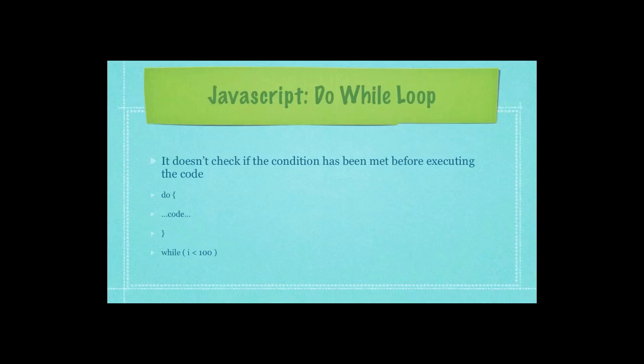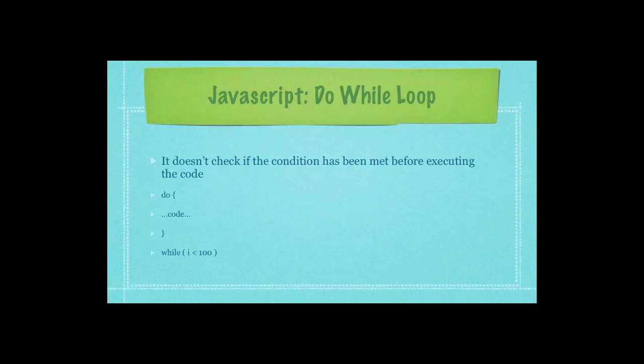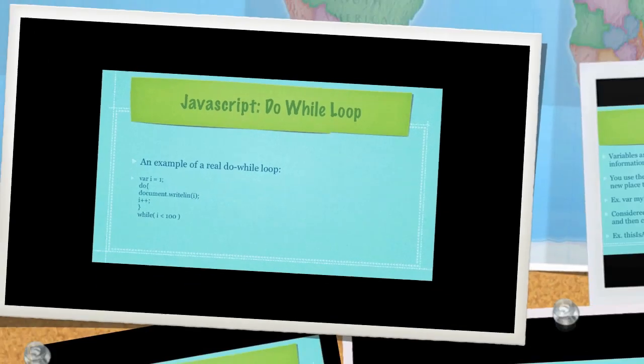The do while loop doesn't check if the condition has been met before executing the code. That is what differs it from the for as well as the while. What it does is it actually goes through, performs all the actions you define in your code, and then at the end checks to make sure the variable is less than 100. A real example of a do while loop. First off, it's going to output the value of I to the screen. Then it's going to add one to that value. And then it's going to check to make sure that I is indeed less than 100.